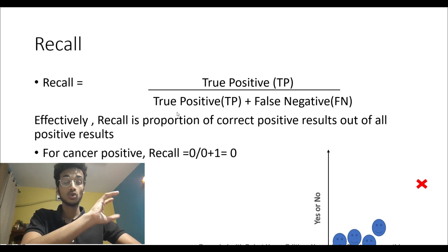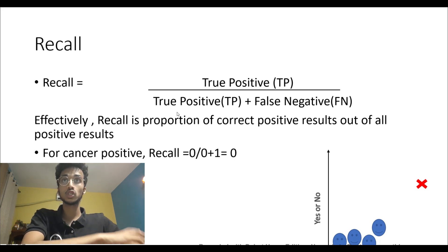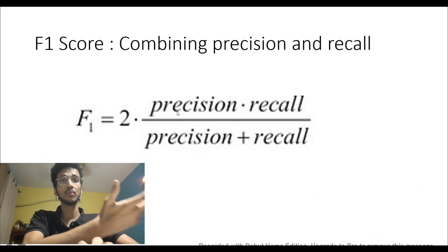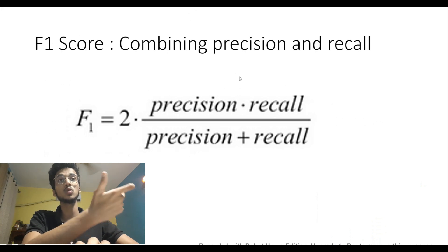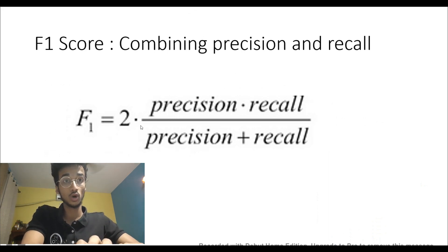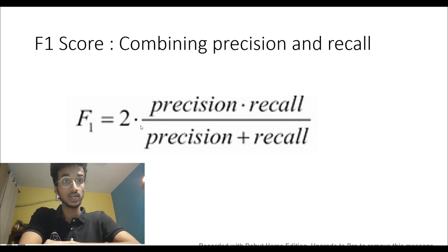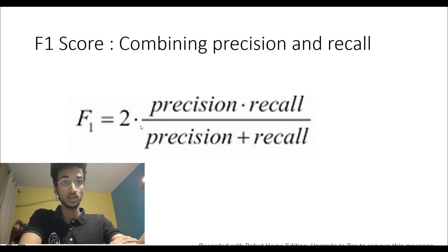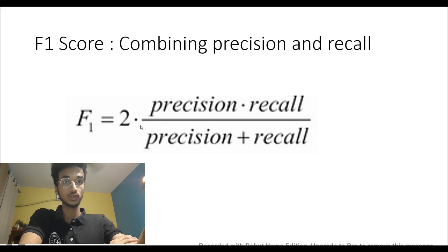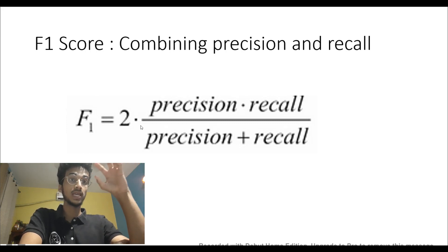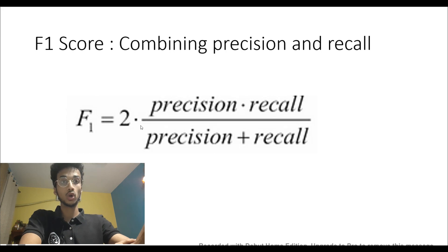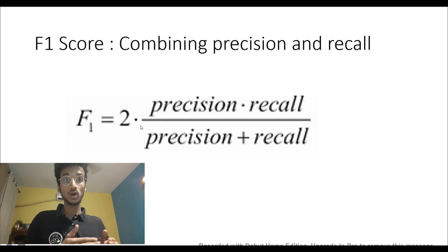Precision zero and recall zero clearly indicate the model is indeed stupid and we should not rely on accuracy alone. Combining precision and recall we get the F1 score — the harmonic mean of precision and recall — defined as 2 × (precision × recall) / (precision + recall). In classification, we check the F1 score for all classes. For example, if a model classifies digits 0 through 9, for each label it separately calculates precision, recall, and F1 score. You then find an average F1 score across all labels to decide whether your model is good.